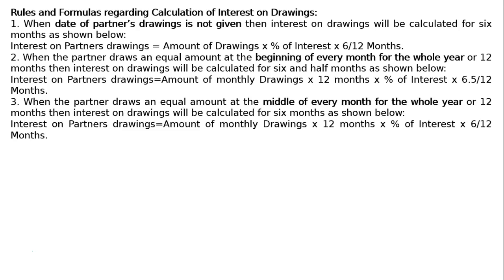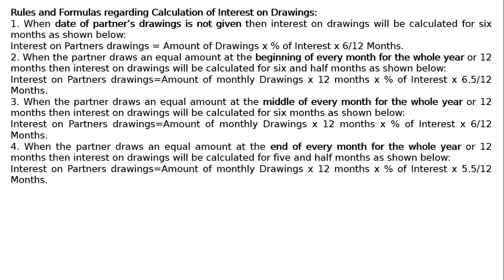The third rule: when the partner draws an equal amount at the middle of every month for the whole year or 12 months, then interest on drawings will be calculated for 6 months. Interest on partner's drawings equals amount of monthly drawings multiplied by 12 months multiplied by percentage of interest multiplied by 6 upon 12 months.